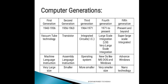Computer generations के time periods इस प्रकार हैं: First generation computer — 1940 से 1956 तक। Second generation computer — 1956 to 1963। Third generation computer — 1964 to 1971। Fourth generation computer — 1971 to present time। आज के समय में जो computer use हो रहा है वह maximum fourth generation computer है। कुछ smart computers हैं जो fifth generation computer के criteria में आते हैं।